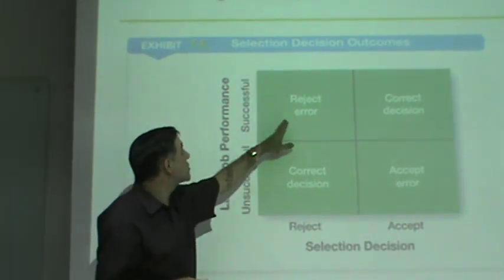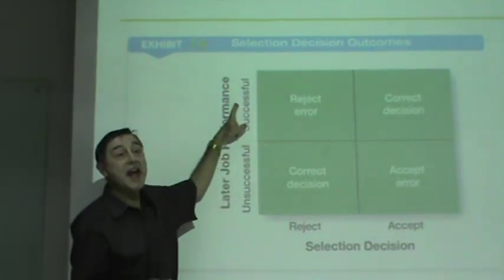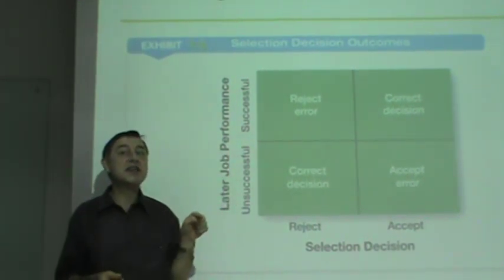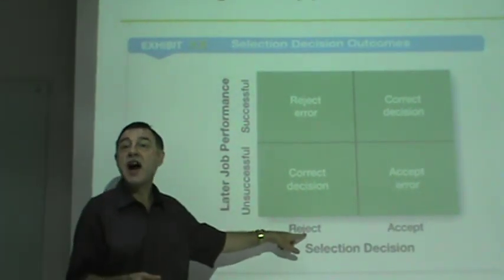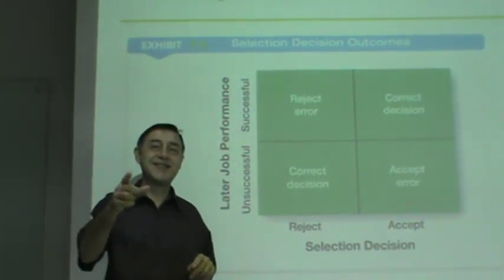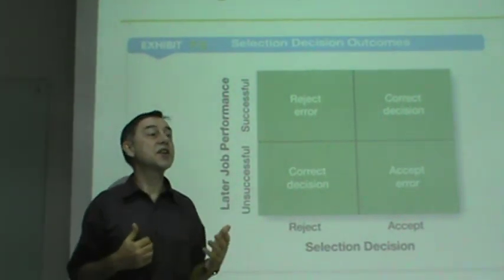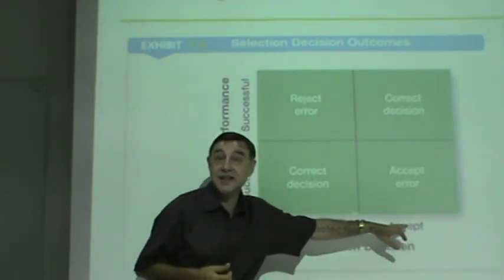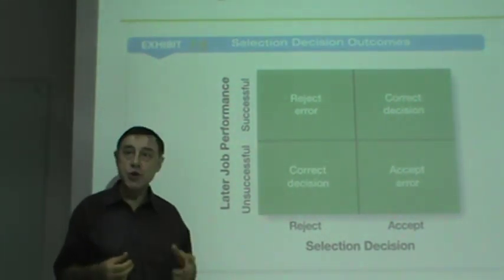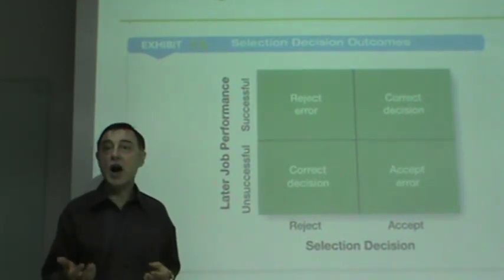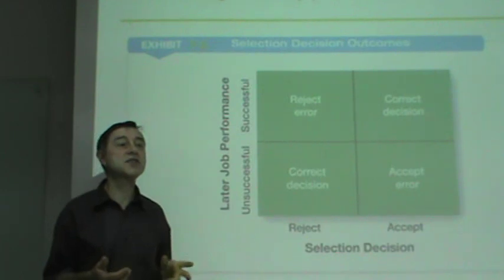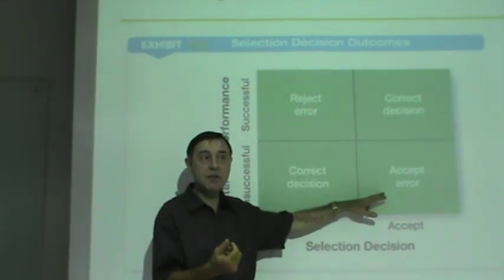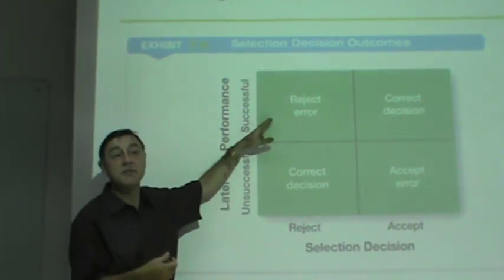Hiring the wrong employee is a relatively expensive error in many businesses. The other type of error is called a reject error. In a reject error, you have a good employee — one who would be successful if hired — but you don't hire them. You reject them for some reason. So these are the two fundamental errors: in one case you have a bad employee and give them a job; in the other you have a good employee but don't give them a job.